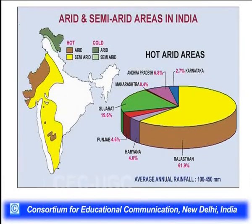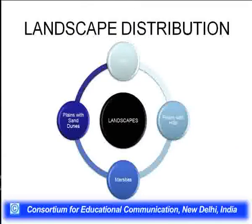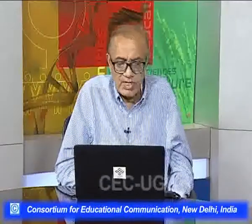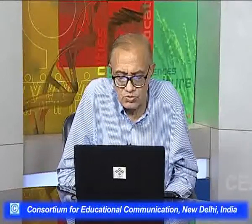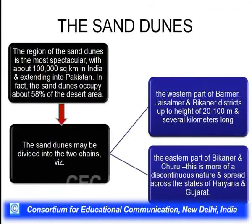Looking at the arid and semi-arid areas of India: Rajasthan accounts for 61.9 percent, Gujarat 19.6 percent, Andhra Pradesh 6.8 percent, Punjab 4.6 percent, Haryana 4 percent, Karnataka 2.7 percent, and Maharashtra 0.4 percent. The landscape includes a combination of hills, plains with sand dunes, plains with hills, and marshes. Sand dunes occupy almost 58 percent of the total desert area. Sand dunes may be divided into two chains: the western part in Barmer, Jaisalmer, and Bikaner districts where dunes reach heights of 20 to 100 meters, and the eastern part in Bikaner-Churu which is largely discontinuous and sporadic.